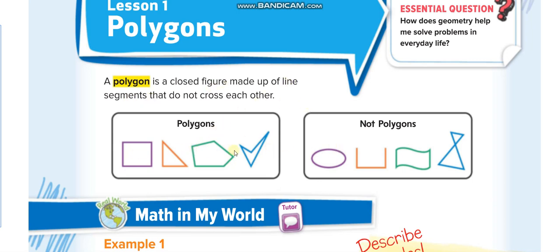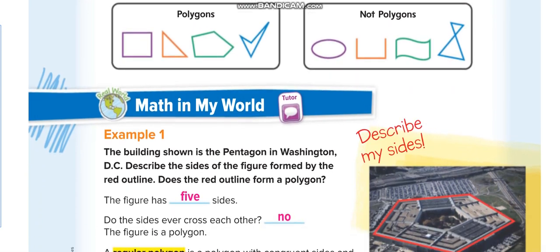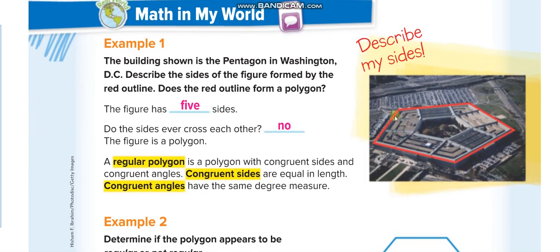Now let's start the first example. This building shown is the Pentagon in Washington. It has how many sides? One, two, three, four, and five — so the figure has five sides. Do the sides ever cross each other? No, they are not crossing each other; they are just joining each other at these points.